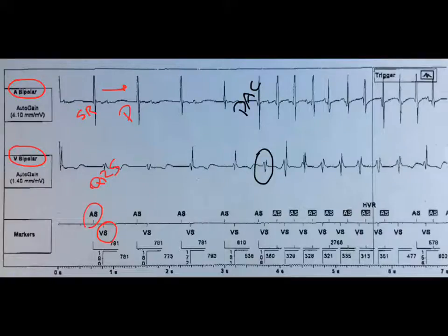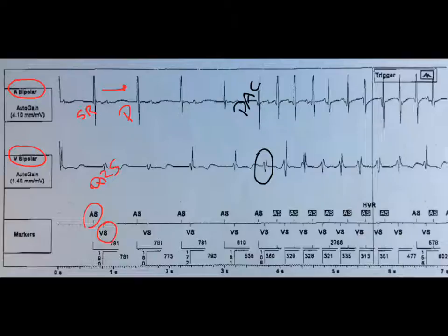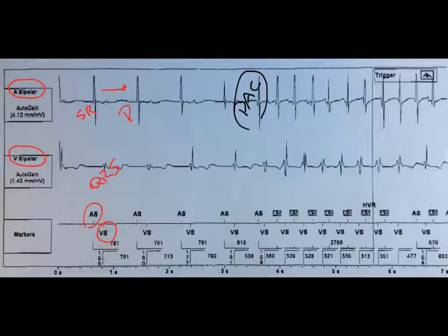The question is whether this rhythm is VT — ventricular tachycardia — or atrial tachycardia. This arrhythmia starts first with a PAC, which makes it very unlikely for a VT that starts with a PAC. So it starts with a PAC.